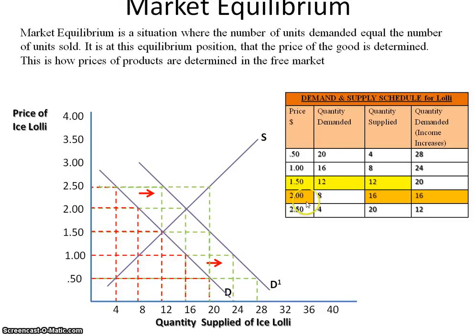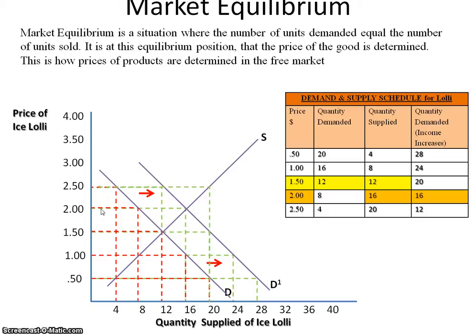Our diagram matches the information in the demand schedule. With the original demand curve, the equilibrium price is $1.50, where 12 units supplied are demanded. With increasing income, the demand curve shifts to the right, and the new equilibrium — based on the one supply curve intersecting with demand curve D¹ — gives us $2.00 and 16 units. So at the first income level, the price is $1.50, and at the new income level the price is $2.00. I hope the market equilibrium process was clear, and I encourage you to stay tuned for future videos. Thank you.